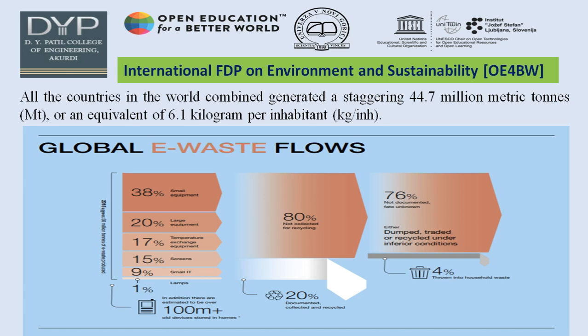The global breakdown shows 38% for small equipment, 20% for large equipment, 70% for temperature equipment, 15% for screens, 9% for small IT, and 1% for lamps. Most of the time, 80% is not collected for recycling. 76% goes to unknown destinations and is either dumped, traded, or recycled under inferior conditions — called the 4%. The remaining 20% is properly documented, collected, and recycled.